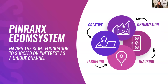This is our Pin Ranks e-com system — having the right foundation to succeed on Pinterest requires four major components. One: your creative has to be on point and Pinterest-specific. Two: your targeting has to be really good, with a mix of keywords and interests. Three: your optimization has to be good — you don't want to optimize too fast because Pinterest is a slower moving platform with different optimization strategies than Facebook. Four: your tracking has to be on point so you can actually see how conversions are happening.